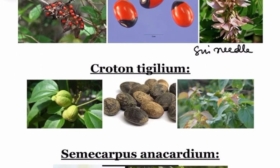Next we have Croton, also called as Jamal Gota. The active principle is Crotein. We also have Crotonoside and Crotonic Acid.